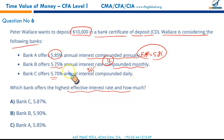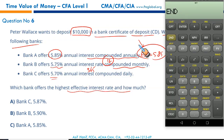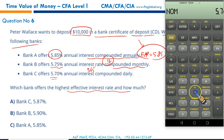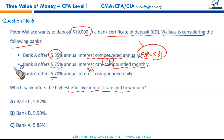We don't need to calculate for Bank A — it's already there. For Banks B and C, use the interest rate conversion function: Second, ICONV. Nominal rate = 5.75, enter, up arrow, frequency = 12, enter, up arrow, press CPT. The effective annual rate for Bank B is 5.90%.